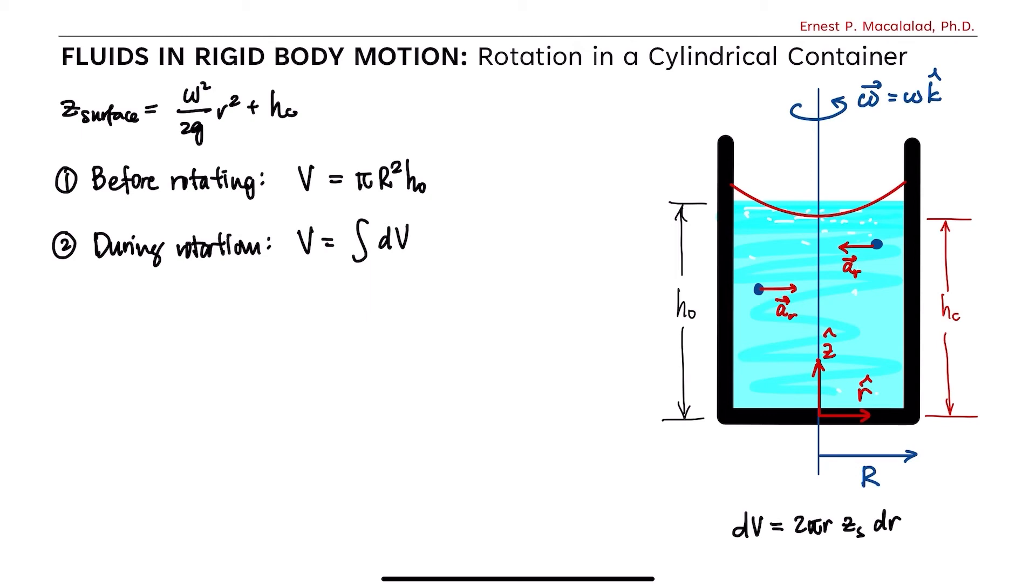So therefore, the volume of the liquid while rotating is written as integral of 2 pi r z s dr from 0 to R, where r is the radius of the cylindrical container. Substituting our equation for the z surface, we now have v equals 2 pi times integral of r times omega squared over 2g r squared plus hc dr integrated from 0 to R.